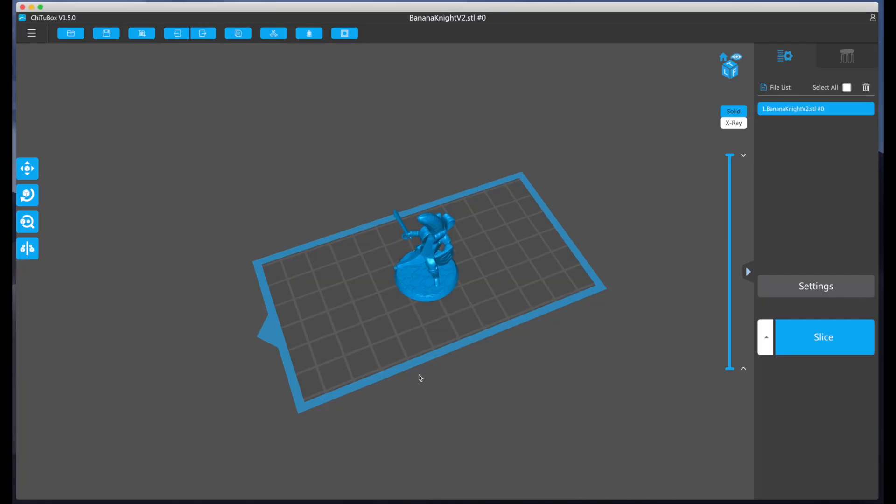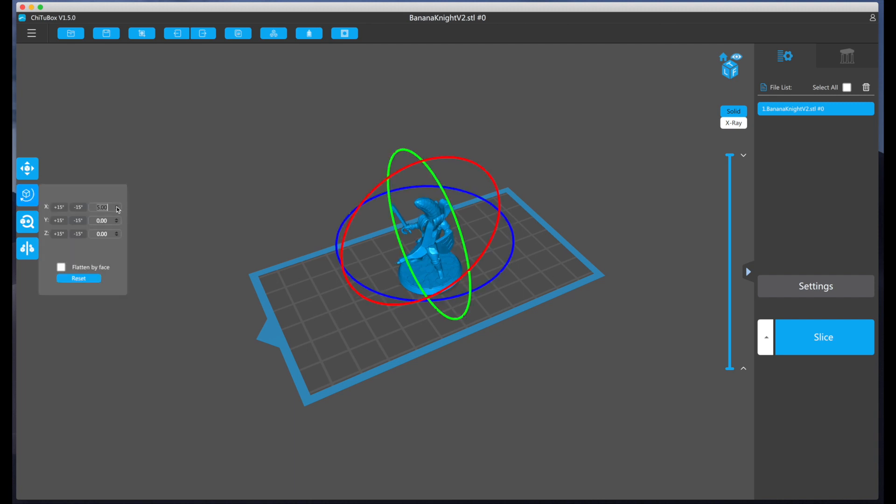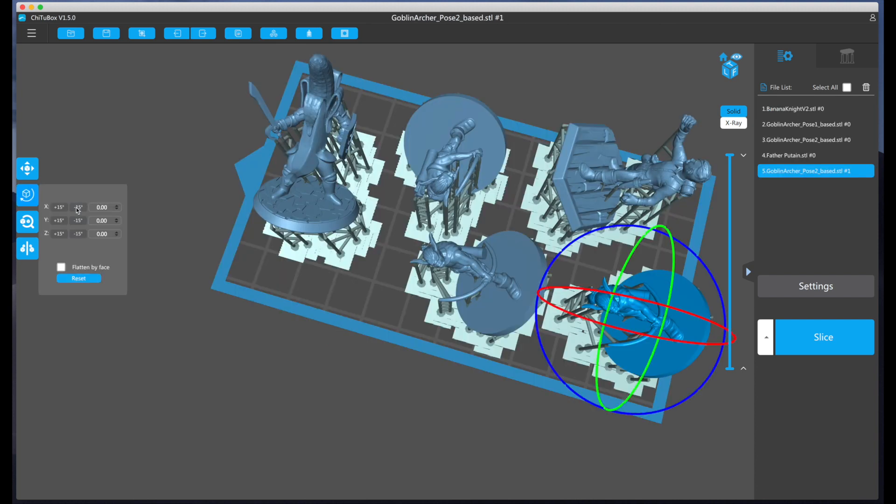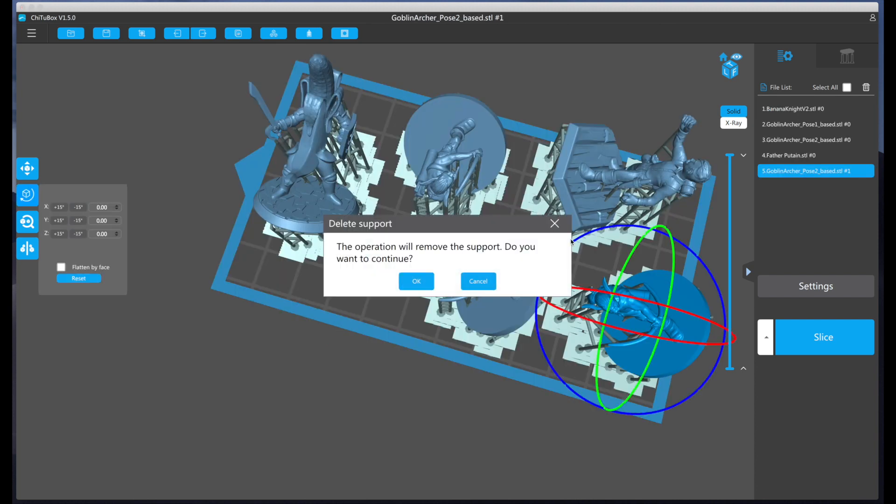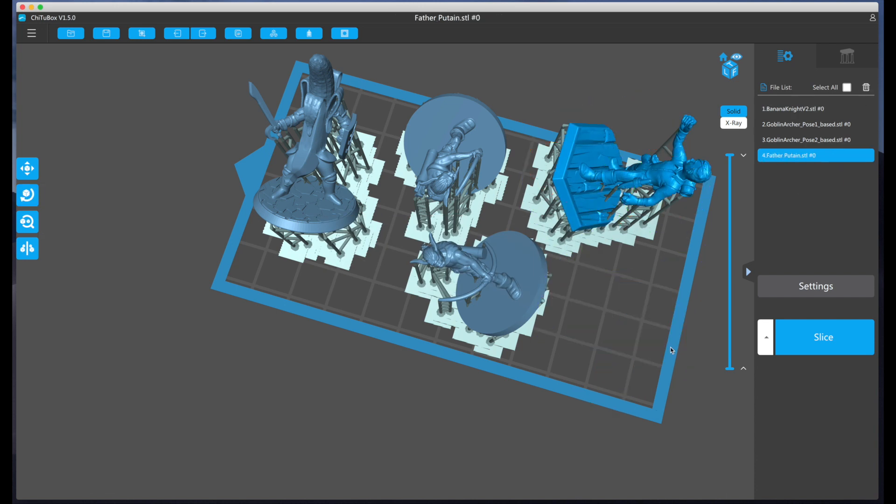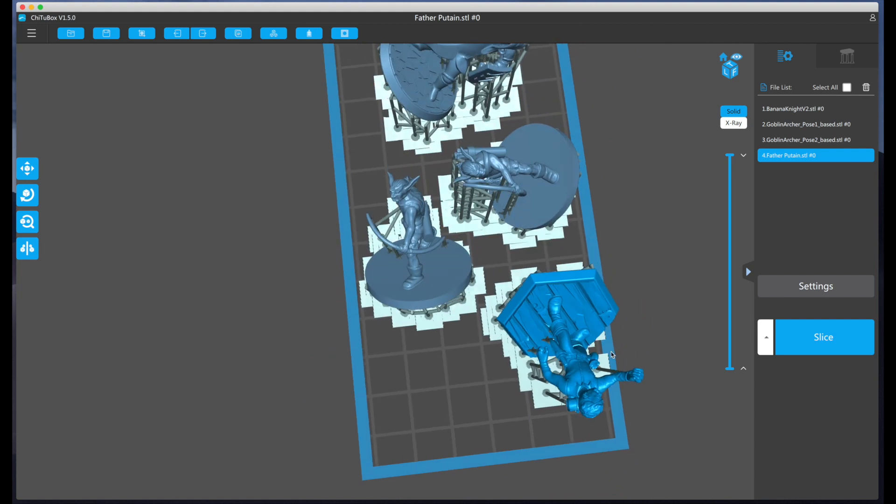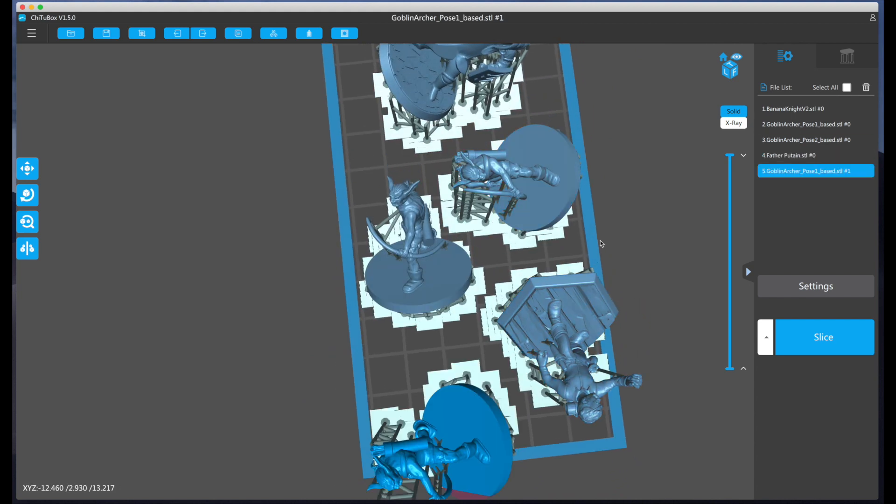The Elegoo Mars comes with ChituBox slicing software. This free program converts your 3D models into specific machine instructions. This slicer is a dream to use. It's a really friendly software interface and it lets you easily arrange print jobs, generate supports, adjust settings and check final print layers. It's also very fast to slice your models and stable as well. It rarely struggles or hangs even with big files.